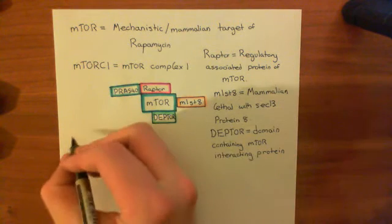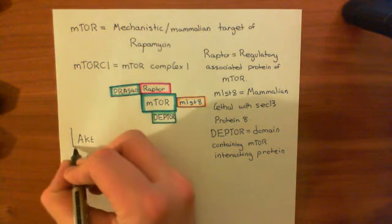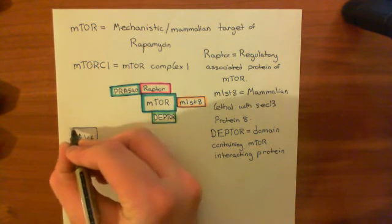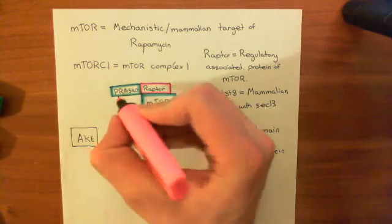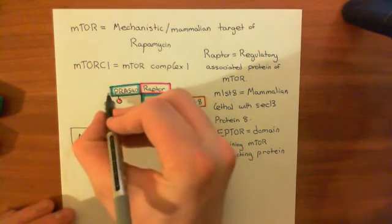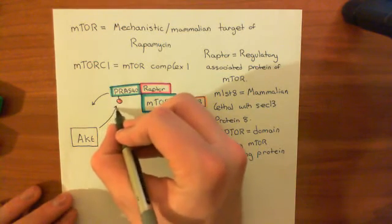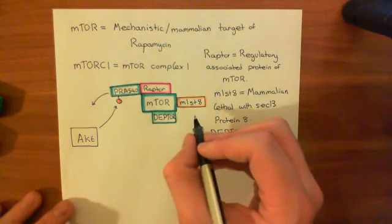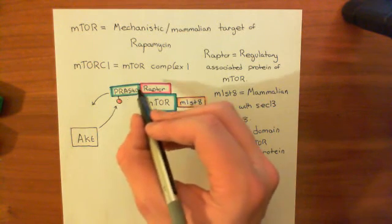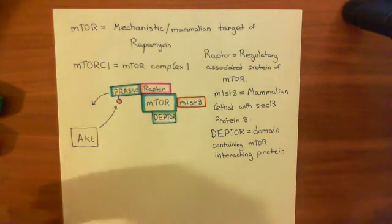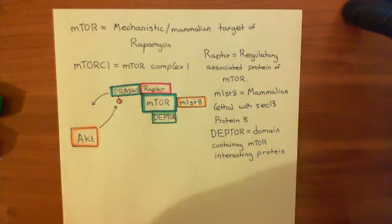There are two pathways. Firstly, AKT phosphorylates the PRAZ40 protein. When it phosphorylates PRAZ40, PRAZ40 then falls off the RAPTOR protein, and when PRAZ40 falls off RAPTOR, that activates mTORC1. So the mammalian target of rapamycin complex 1 becomes active when PRAZ40 cleaves off from RAPTOR, and AKT is responsible for phosphorylating PRAZ40 and causing this cleaving off.